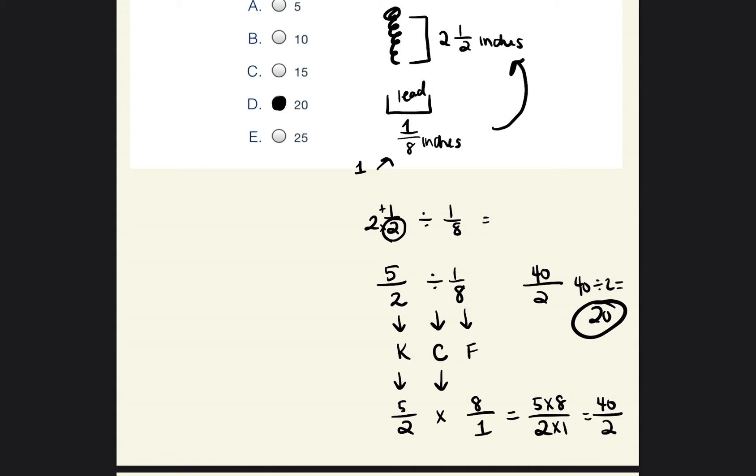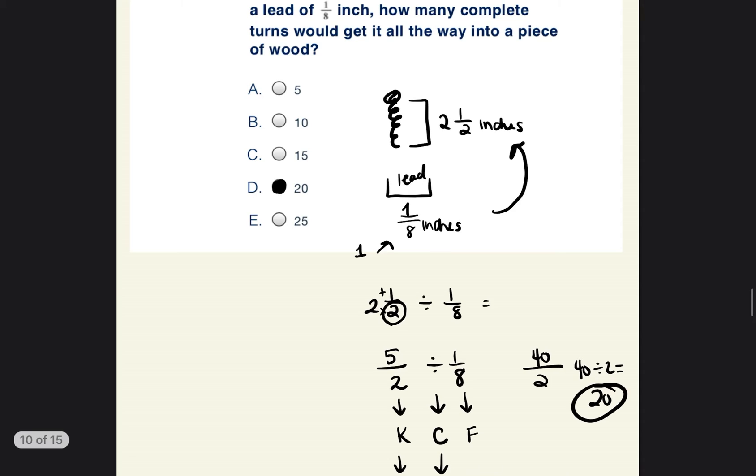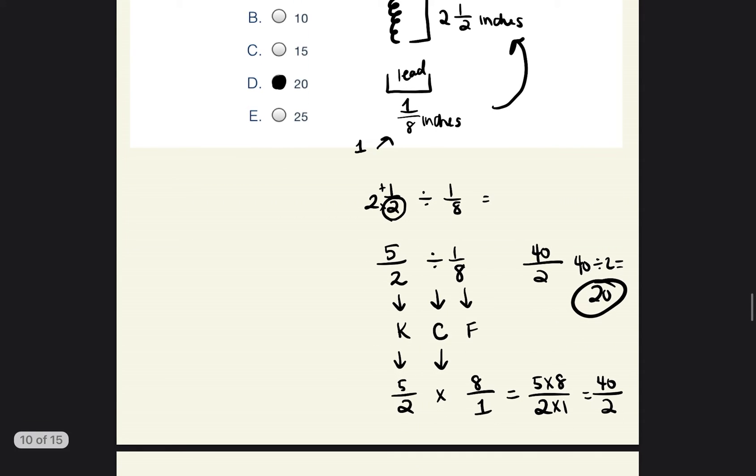So it would take 20 turns in order to get this screw all the way into the wall. All right, so if you're new to this, just take this as a note: keep, change, flip. Keep the first fraction, change the division into multiplication, and flip and find the reciprocal. And then you can go ahead and multiply them out.